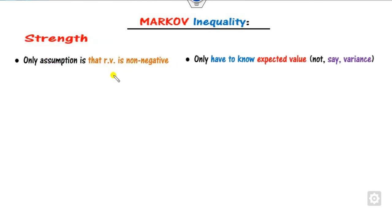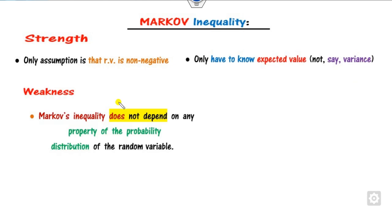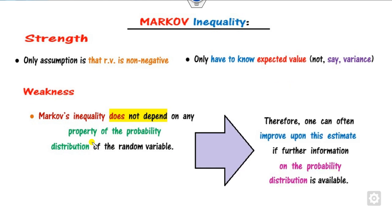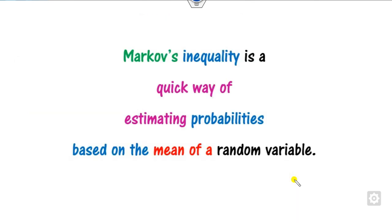The strength of Markov inequality is that the only assumption required is that the random variable X is non-negative, and it requires only the expected value — the mean. There is no need for the variance, unlike Chebyshev inequality which requires the variance. However, a weakness is that Markov inequality does not involve any probability distribution — it only uses E[X] without knowing the distribution. Therefore, you can improve estimation depending on the specific probability distribution. Markov inequality is always used as a quick way to estimate probability based only on the mean.